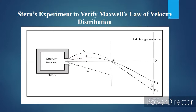The hot tungsten wire has a cylindrical shaped detector surrounding it. That cylinder is connected to a micrometer outside. When cesium atoms get ionized, free electrons are emitted. Those free electrons are collected by the cylinder, and that constitutes a current. If more cesium atoms move to that particular point, you will get more current.